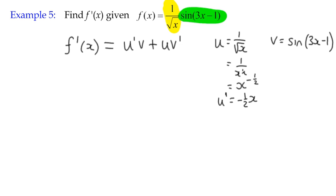Which means that u dash or u prime will be negative a half x. If we take one away from the power negative a half, negative a half take away another one is negative one and a half or negative three over two.